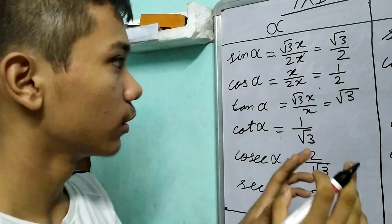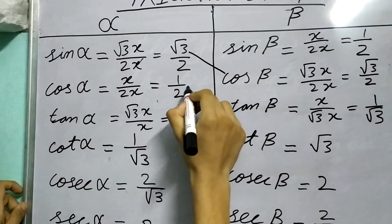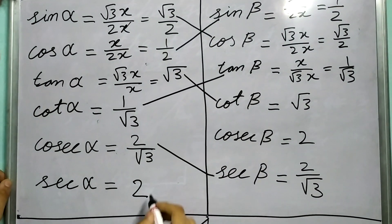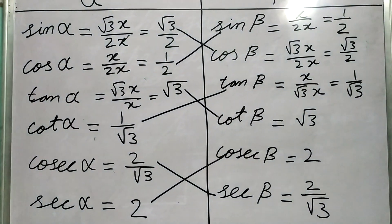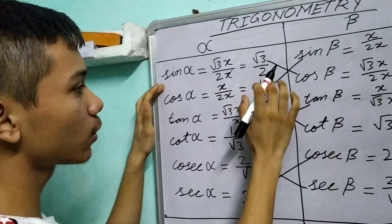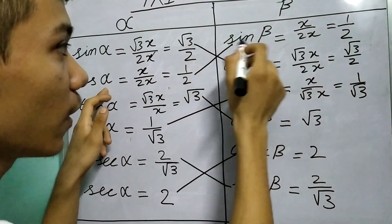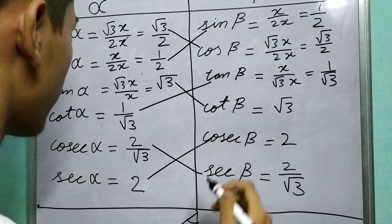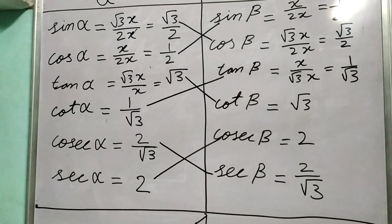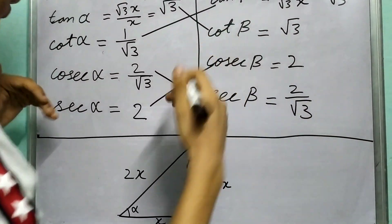Now I want you to watch this very carefully—this is really interesting. Why is this true? This is an important question you should think about. See, the value of sin α equals the value of cos β, both √3/2. Similarly, cos α equals sin β, both 1/2. And for tan and cot: tan α equals cot β, and cot α equals tan β. Similarly, we can prove this for cosec and sec.